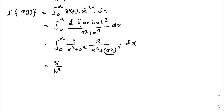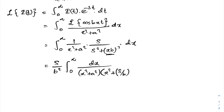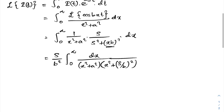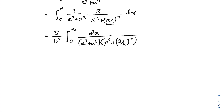So we can write outside of the integral sign: s over b² times the integral from 0 to infinity of dx over (x² + a²)(x² + s²/b²). Then let us use the cover method to find the partial fractions. So we can write s over b² times the integral from 0 to infinity, and I am going to factor x² + a².